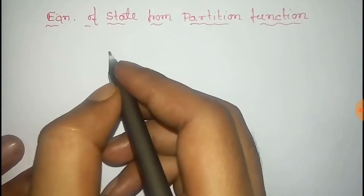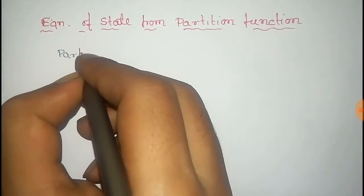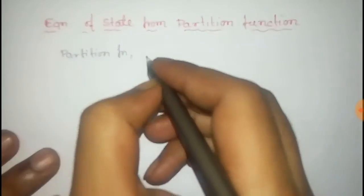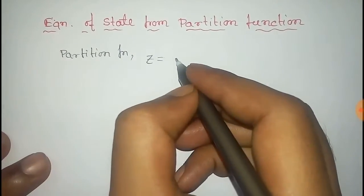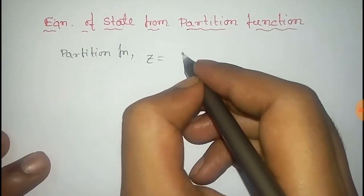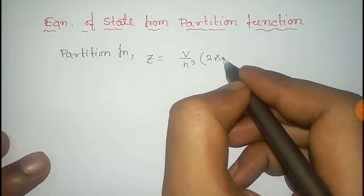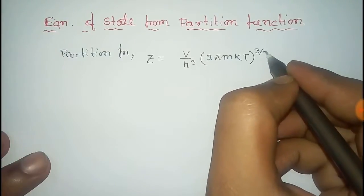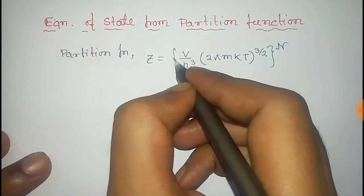In this video we'll find the equation of state from partition function. The expression of partition function is Z equals V over h cubed times 2 pi m k T to the power 3/2, whole to the power N.